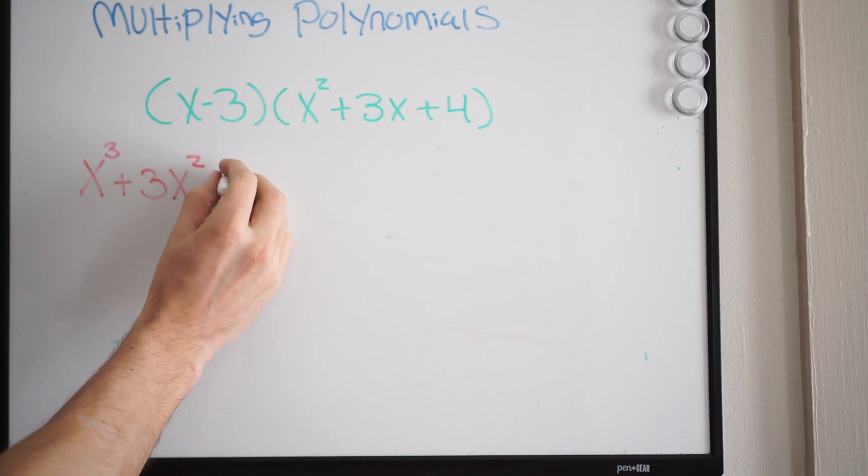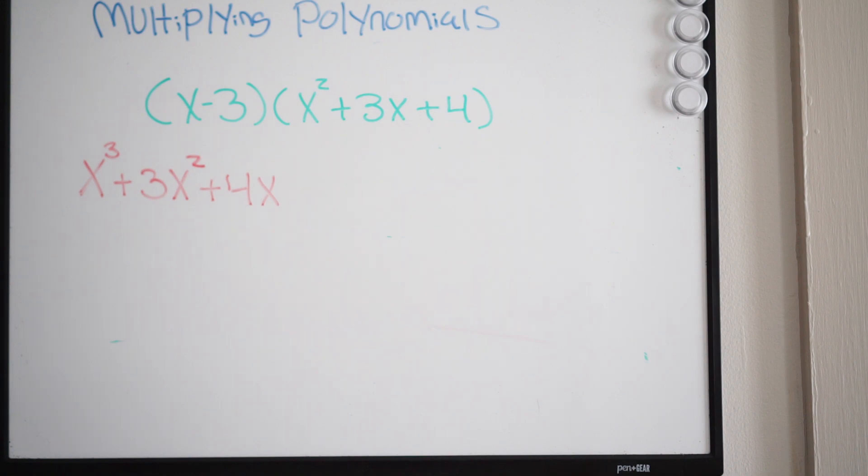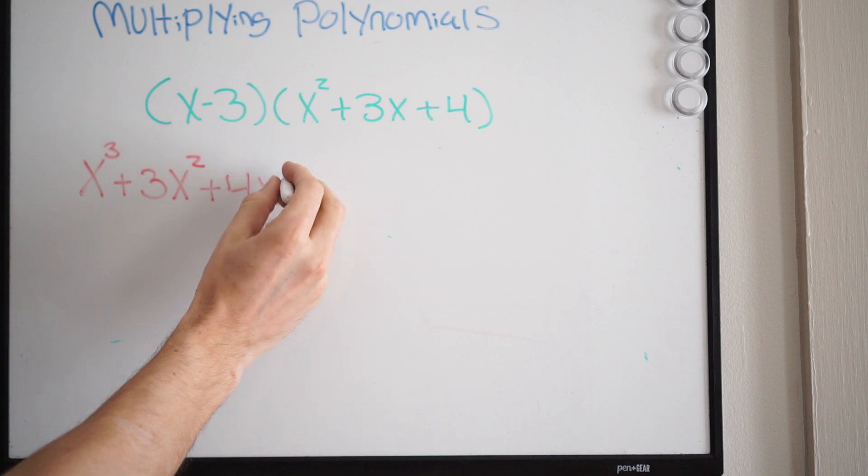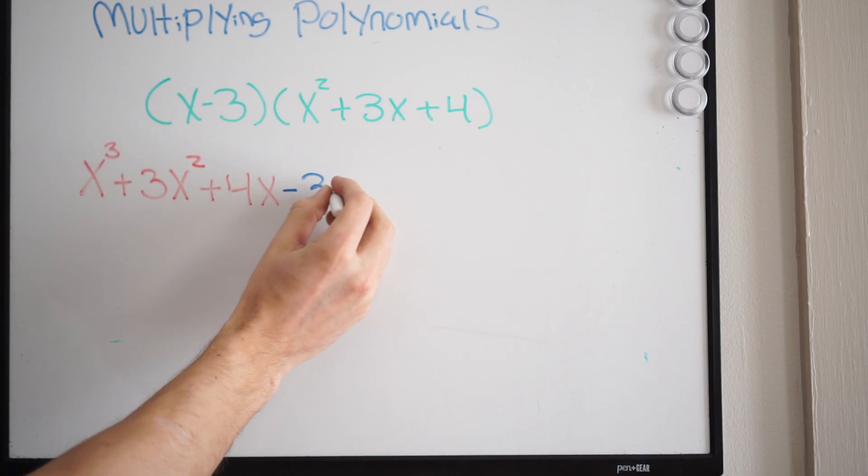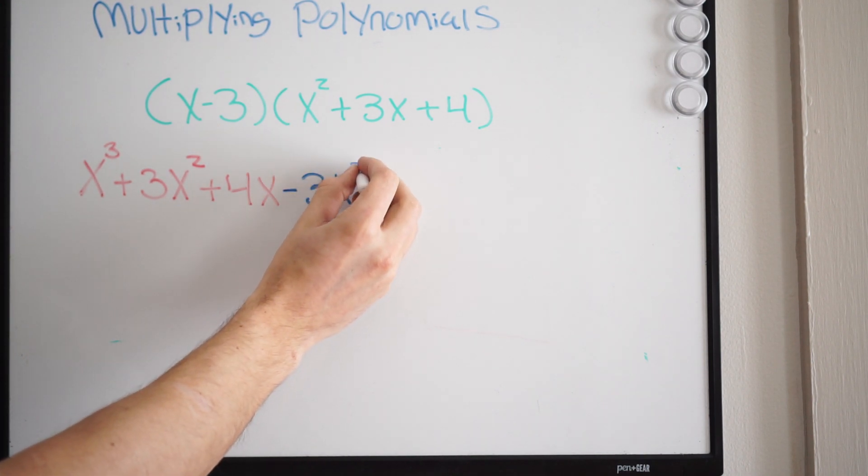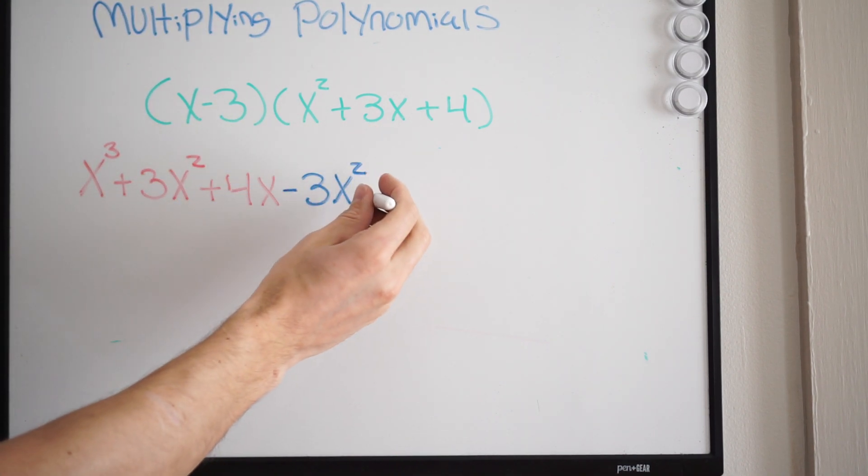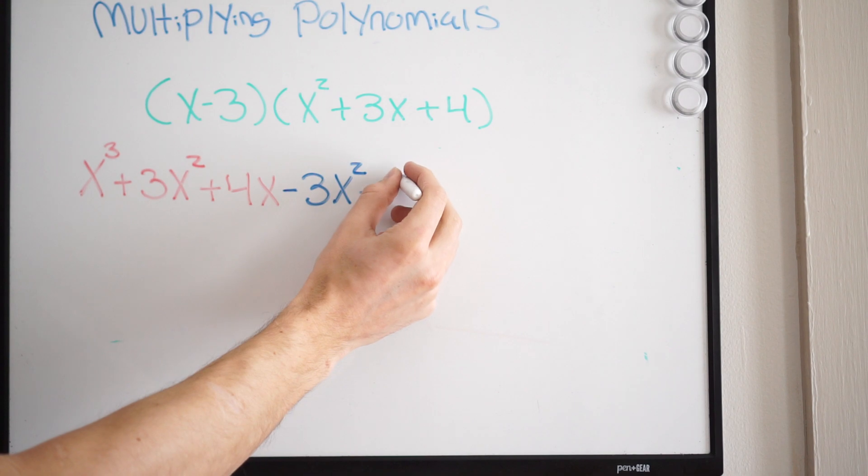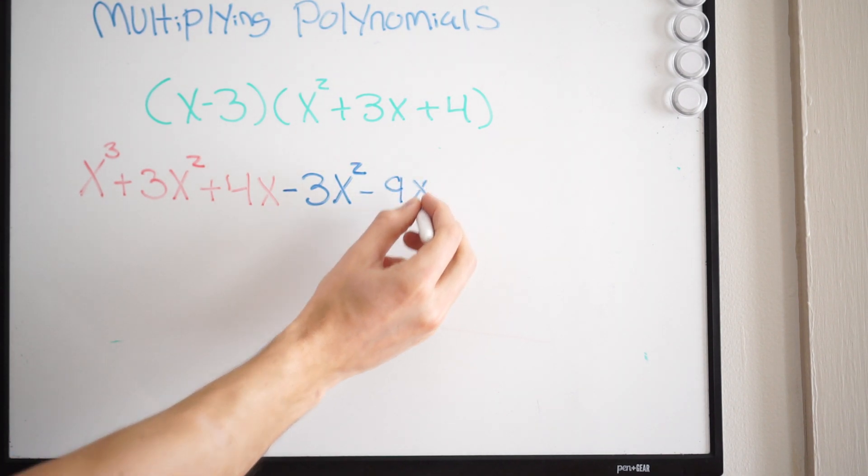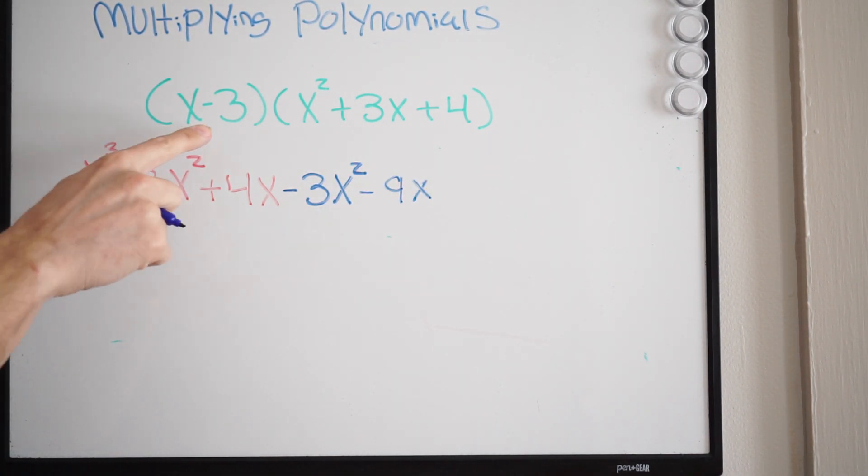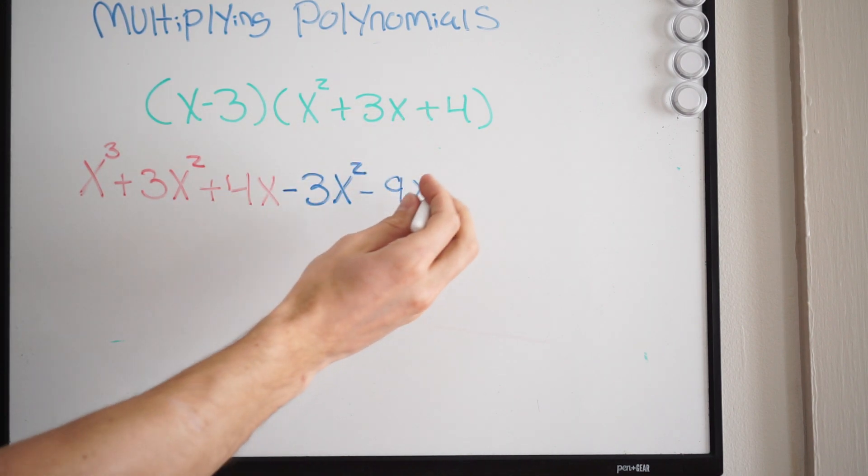So we're done there. Moving on to the next term right here, negative 3 times x squared, well that's going to be negative 3x squared. Negative 3 times 3x, that's negative 9x. And then negative 3 times 4, that's going to be negative 12.